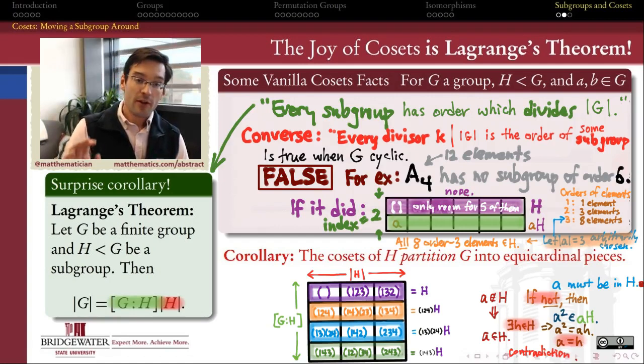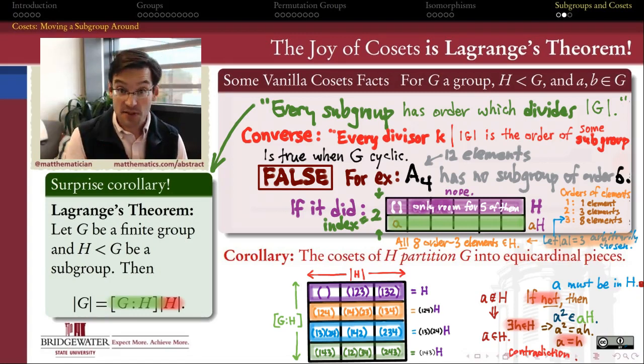So therefore, this converse of Lagrange's theorem is in general not true. We cannot expect, as we did with cyclic groups, that any divisor of the order of a group is going to have a subgroup realizing that order. It was true for cyclic groups, but it's clearly not true in general, as this counterexample shows.